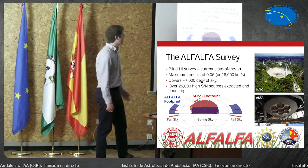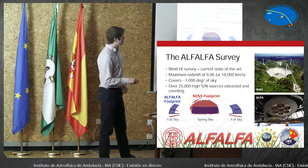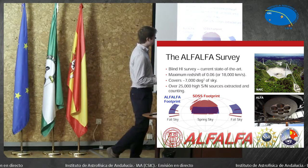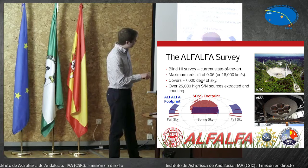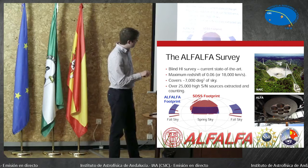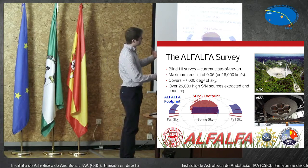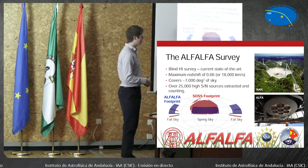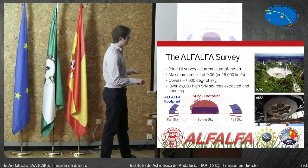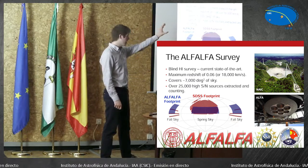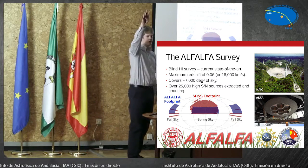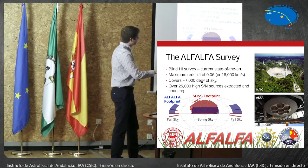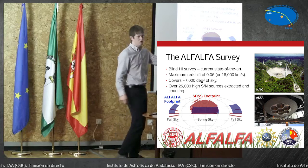The survey that I worked on, looking at H1, was the Alfalfa survey. That was completed with the Arecibo telescope — if you've seen films like Contact or GoldenEye, you may be familiar with this. The instrument called ALFA that we used has seven feed horns, so it's basically a seven-pixel camera, and seven is quite a lot of pixels in radio. We have seven separate beams on the sky simultaneously. The way the survey works is you point the telescope to a particular declination, and then you do nothing for eight hours — it just records as the sky drifts by. The survey is made up of many single-declination strips across the sky.